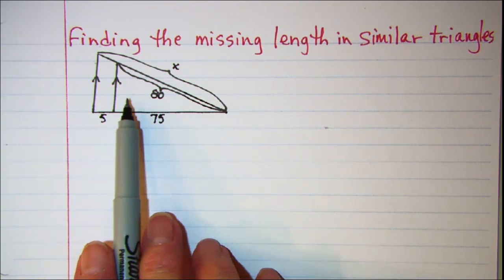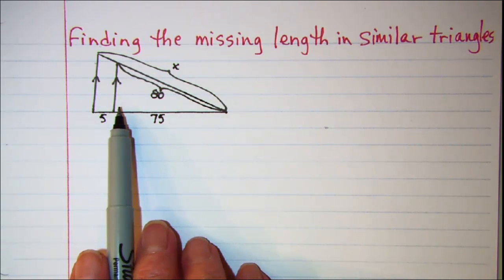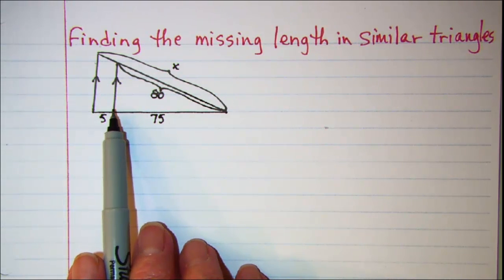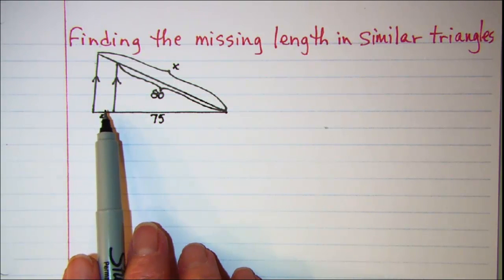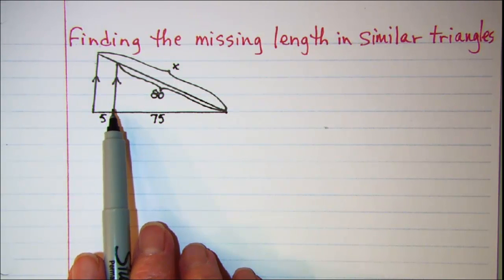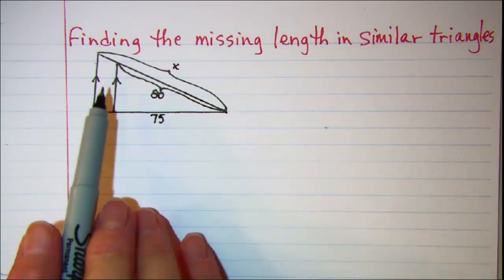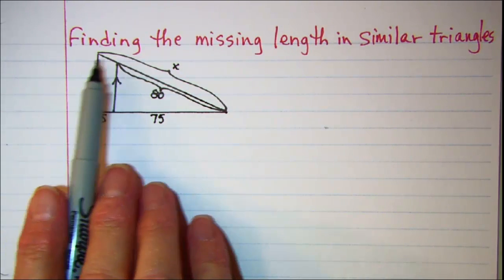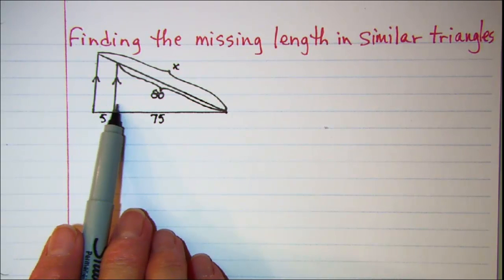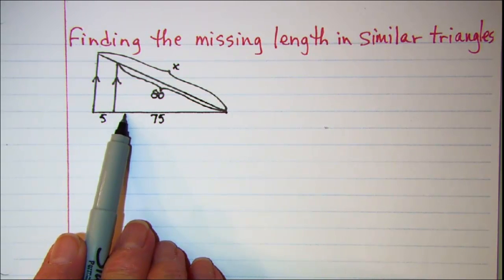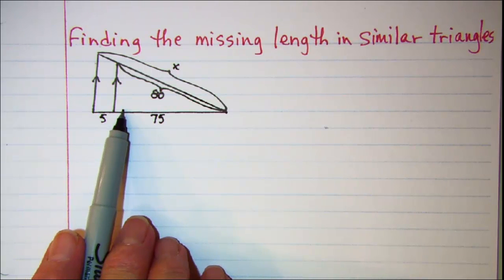The biggest thing that students do often with this type of problem is assume that you have right angles, and we don't have right angles given here. So what we need to do is use the fact that these are parallel lines, and that'll give me this angle congruent to this angle — even though they're not right angles, they are congruent angles.